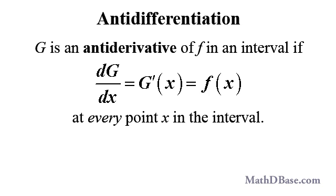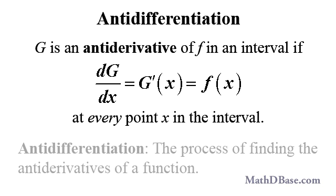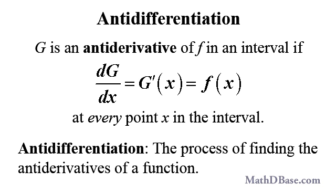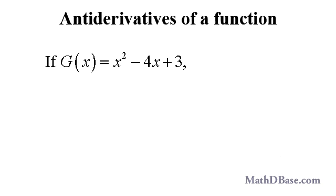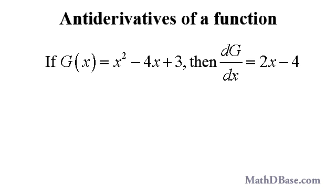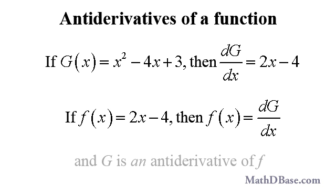A function g is called an antiderivative of a function f on an interval if the derivative of g with respect to x is equal to f of x for every point x in that interval. The process of finding the antiderivatives of a function is called anti-differentiation. For example, if a function g is defined as x squared minus 4x plus 3, then its derivative is 2x minus 4. If the function f is 2x minus 4, then f is the derivative of g, and g is an antiderivative of f.